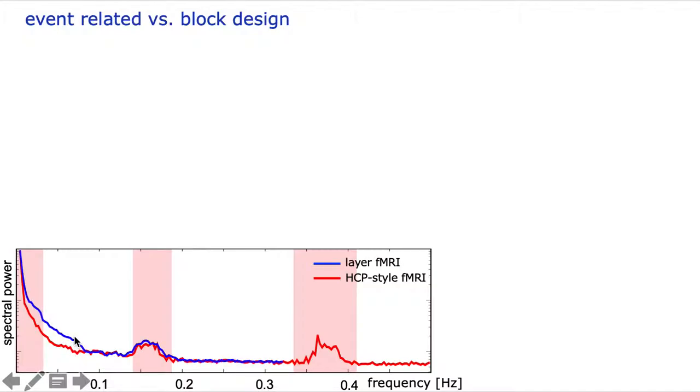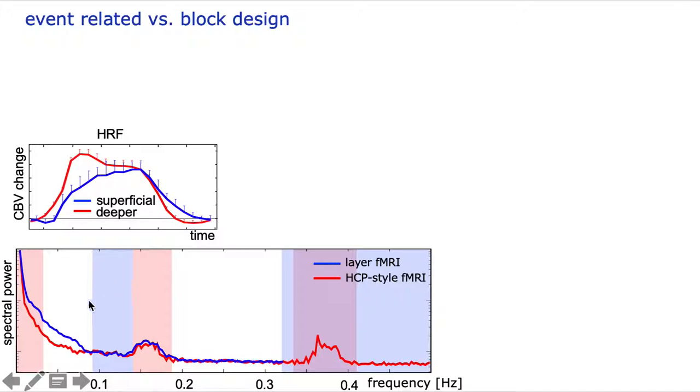For layer-dependent fMRI, this looks slightly different. Obviously, we cannot look at high frequencies because we just don't have the TRs for that. But we also can't really interpret the medium frequency regime of like 6 to 15 seconds, simply because we don't have reasonable assumptions about this canonical HRF. We know that upper and deeper layers have different HRFs simply because they have different vascular compositions, meaning that any signal changes in this frequency regime is probably coming from vessels, not really neural signals. On top of that, layer-dependent fMRI is also not advantageous at low frequencies either, as you can see with the higher 1 over f noise for the blue line compared to the red line.